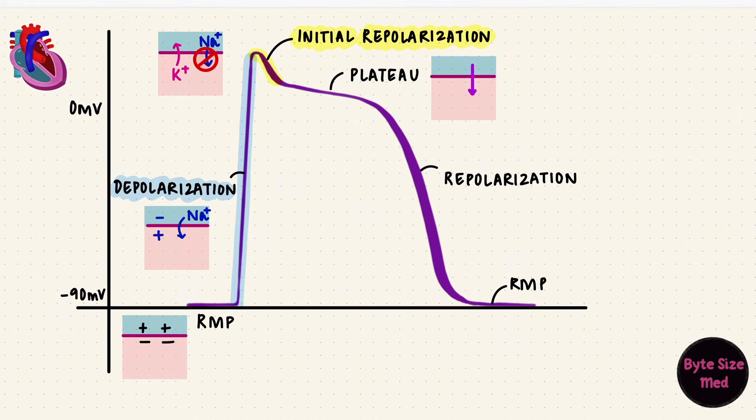But calcium ions are entering the cell while potassium ions are leaving. These two currents balance each other, resulting in sustained depolarization creating the plateau. That's phase two.